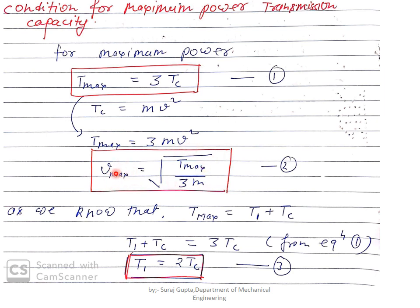From this, v_max equals the square root of T_max divided by 3m. It is v_max because T is at its maximum value. This is equation number two. Since T_max equals T1 plus Tc, substituting into equation one gives T1 plus Tc equals 3·m·v², so T1 equals twice the centrifugal tension.